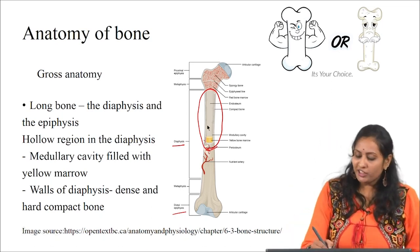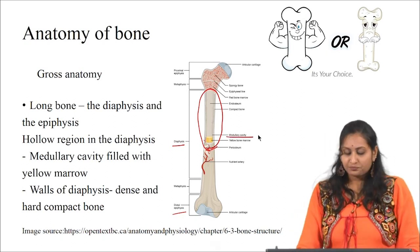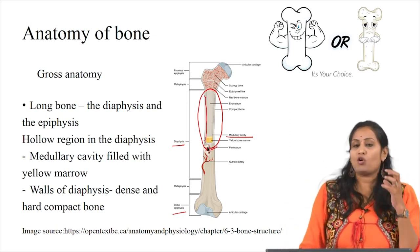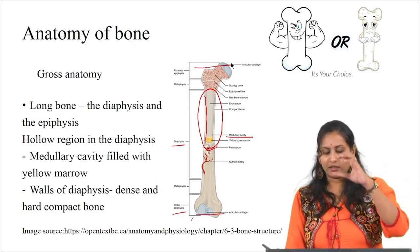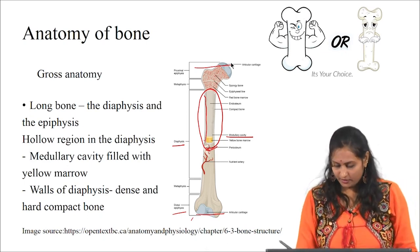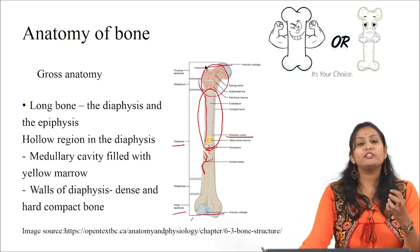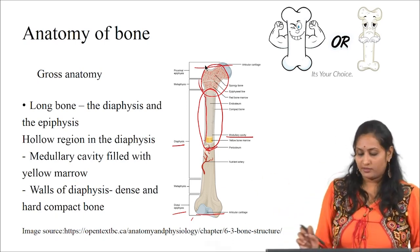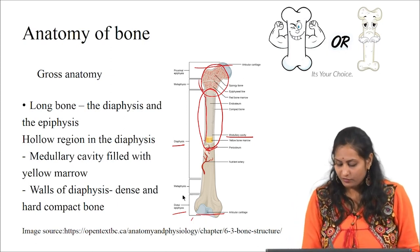The hollow region in the diaphysis is called the medullary cavity, which is filled with yellow bone marrow. The walls of the diaphysis are made up of hard and dense compact bone. At the widest sections at each side of the bone is the epiphysis. It is filled with spongy spaces and red marrow fills these spaces. Each epiphysis connects to the diaphysis at the metaphysis.